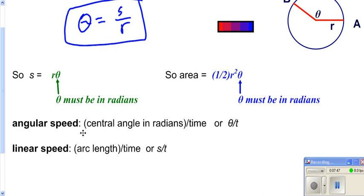We also have angular speed, which is the measure of your central angle in radians divided by time. We also have linear speed when you're dealing with going around a circle. That's the arc length divided by time.